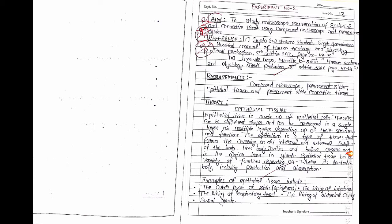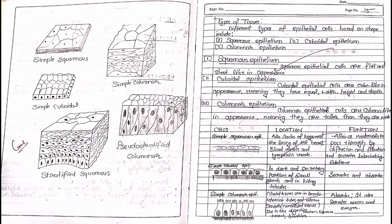After that we see the theory. In this theory we describe the epithelial tissue, compound microscope, connective tissue, and permanent slides and where they are used. Then we see the types of tissue.